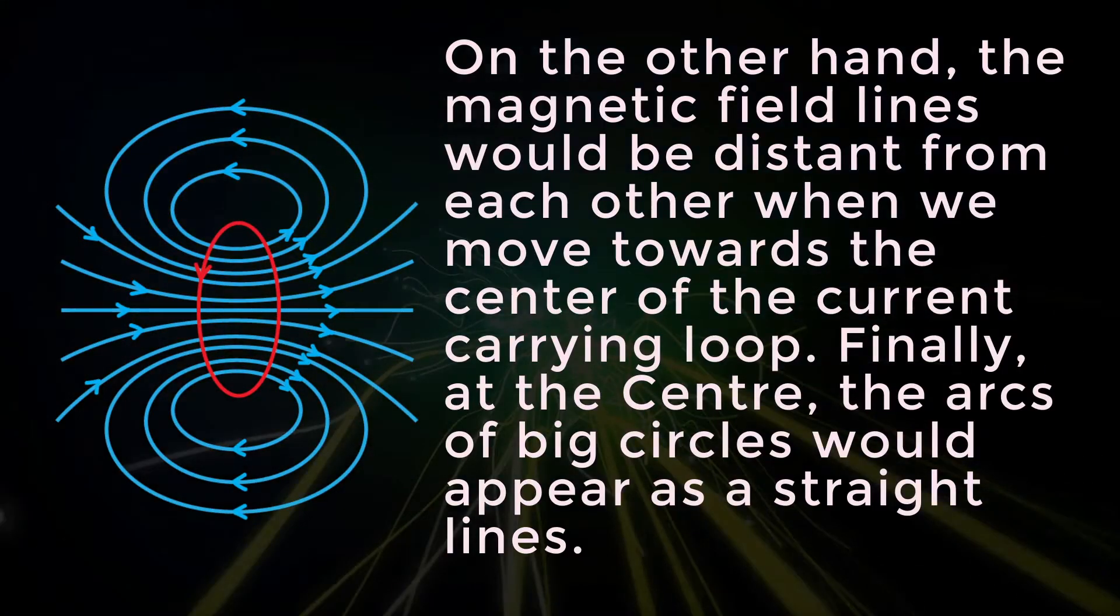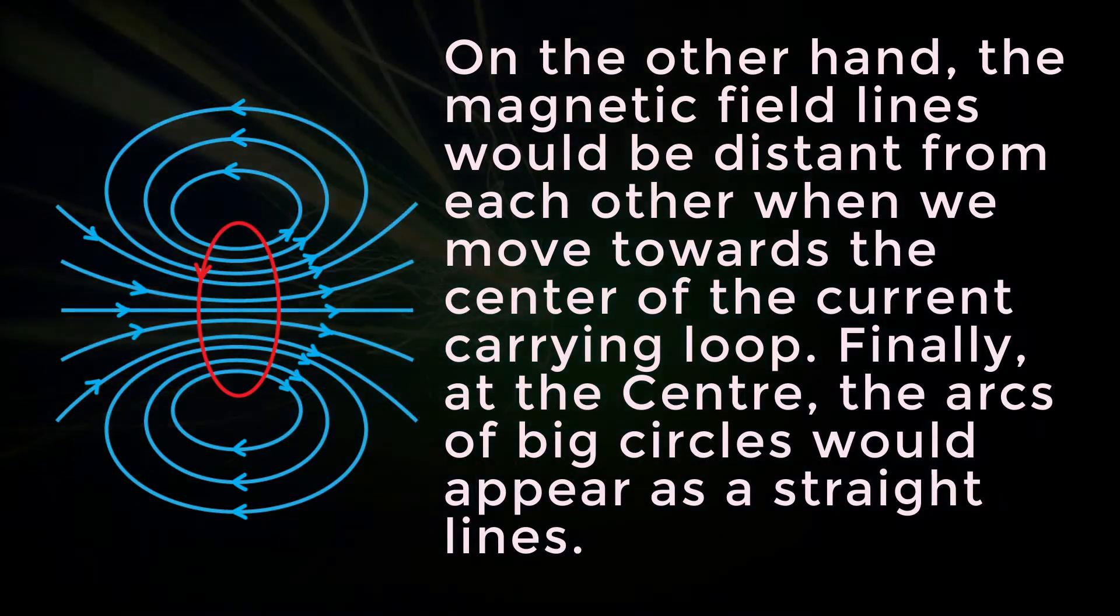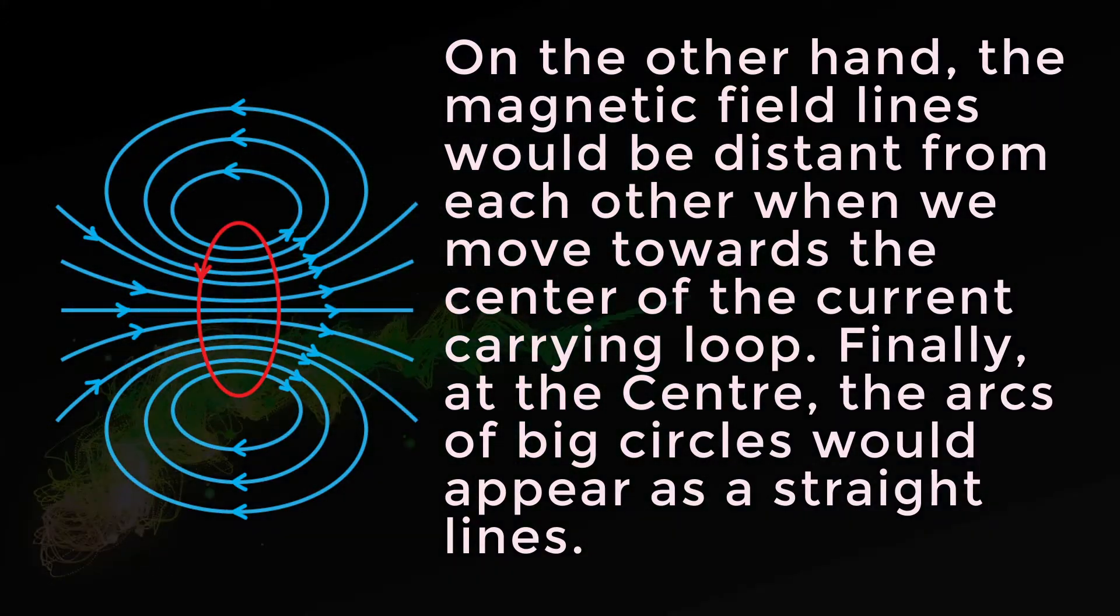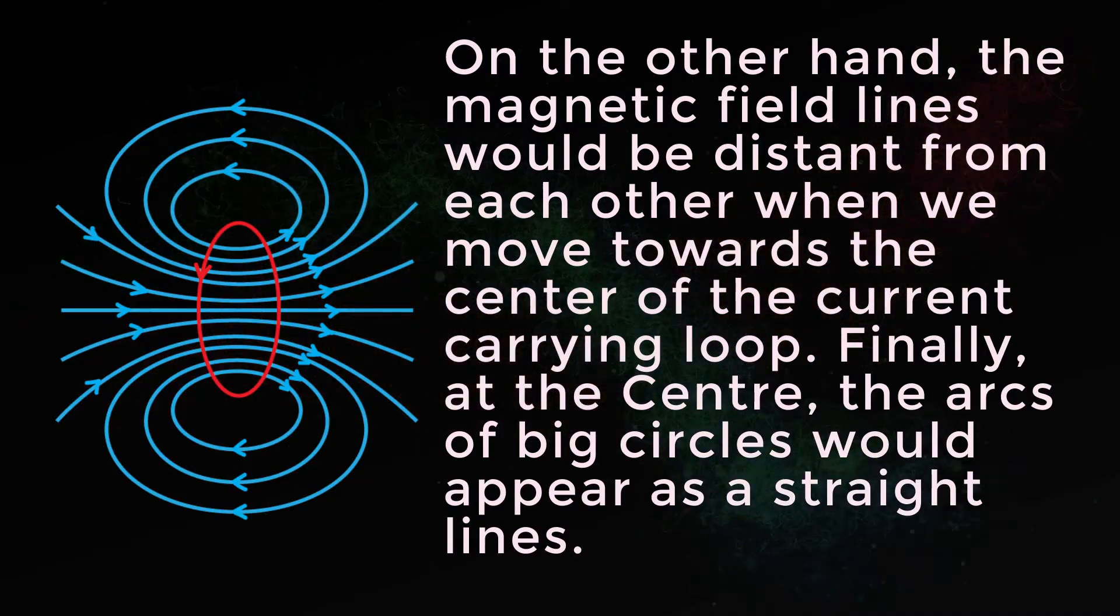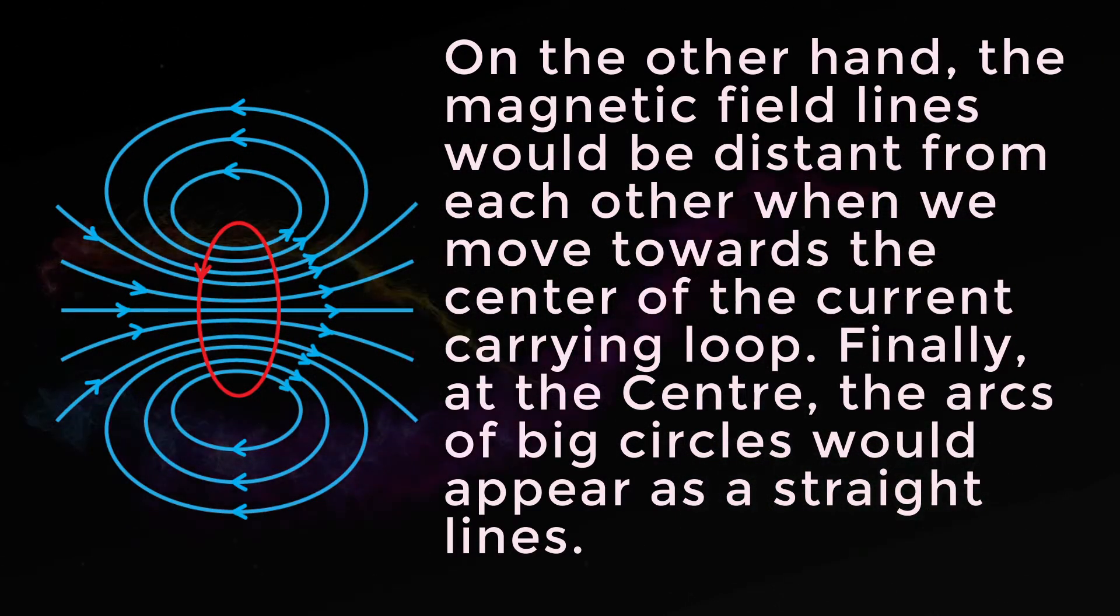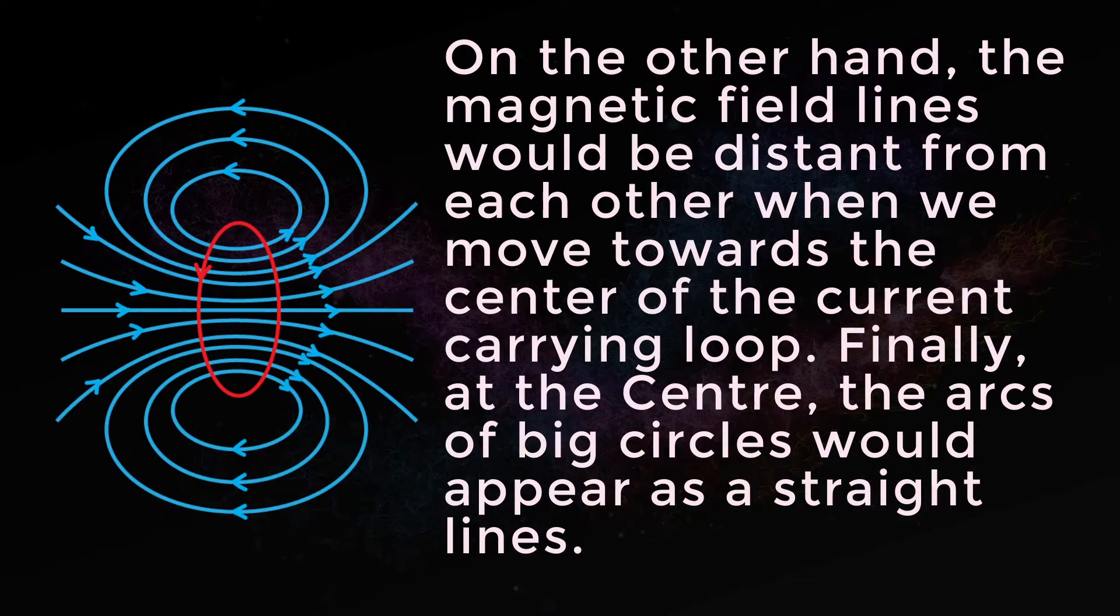On the other hand, the magnetic field lines would be distant from each other when we move towards the center of the current carrying loop. Finally, at the center, the arcs of big circles would appear as a straight line.